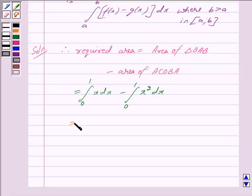Now this equals, integrating x we get x squared by 2 with limit from 0 to 1, minus integrating x squared we get x cubed by 3, and here again limit is from 0 to 1.